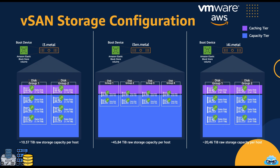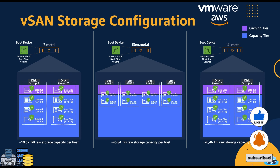Within VMware Cloud on AWS, hardware configurations vary based on the node model type. Each model type may feature a varying number of hard drives depending on its specifications. Despite the hardware differences, all drives are aggregated into a storage pool consisting of a specific number of disk groups. Within these disk groups, drives are strategically allocated for different purposes: some drives are utilized for caching, enhancing performance, while others become part of the Capacity Tier, providing ample storage for your workloads.